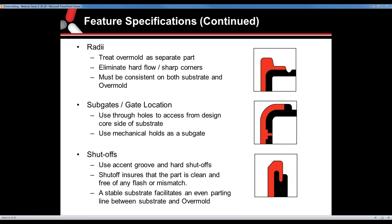Question: Typically we want seven degrees on a shutoff feature between core and cavity — do you need that on the substrate shutoffs? Seven degrees is what every designer would love to have. Depending on the application, two, three, or four degrees may be used depending on any texture, as different textures require different draft. If a designer can give us seven degrees, we're very happy. A lot of times that's not allowed per customer specifications, but any amount of draft we can get is preferable.